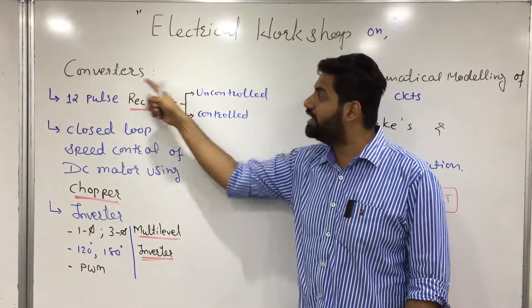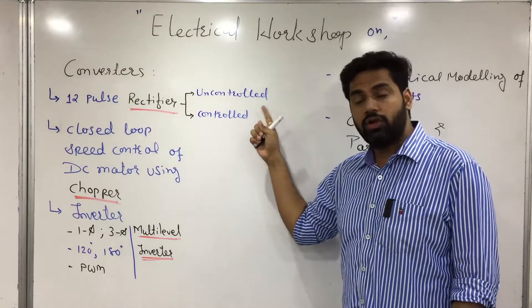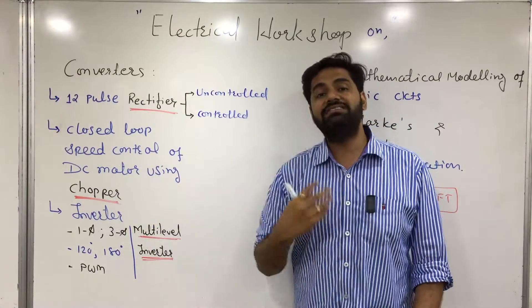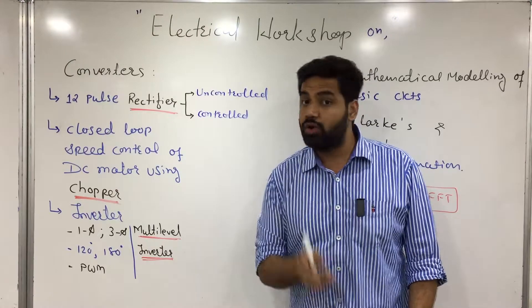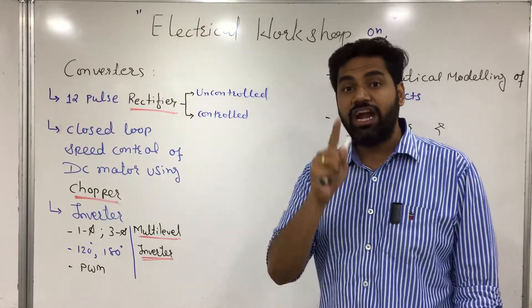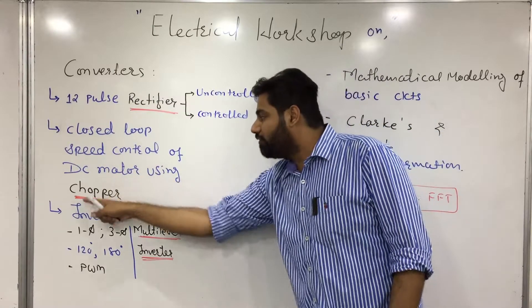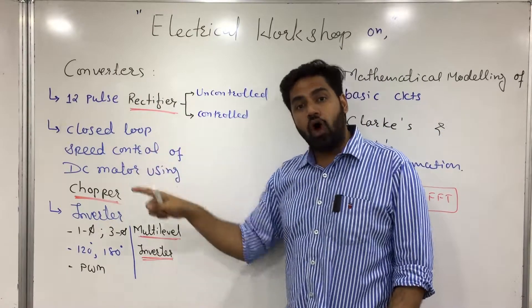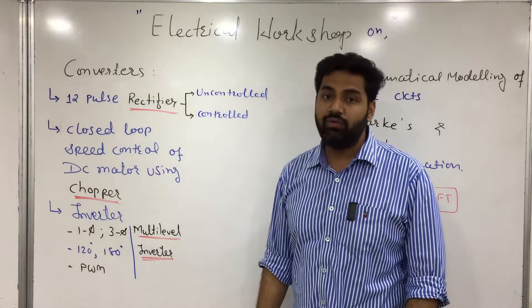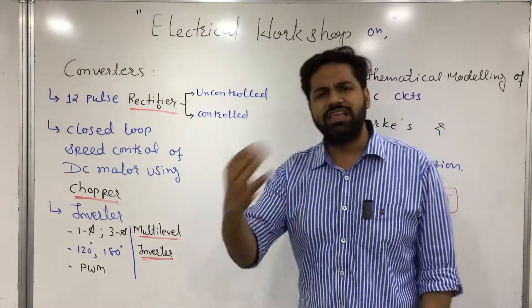In the rectifier section, we are going to deal with a 12-pulse rectifier covering both uncontrolled and controlled topologies. In the chopper section, we are going to deal with DC motor speed control, which is a closed-loop speed control where you will understand how exactly we tune a PI controller. The chopper is our converter for this section.